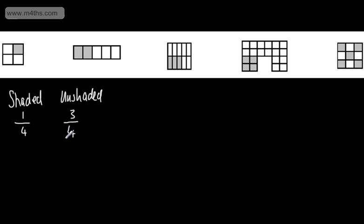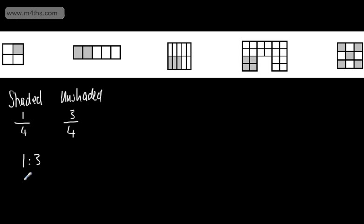When we're talking about ratios, we compare the parts. So for every amount of one thing, how much is there of another thing? So if I wanted to write this as a ratio, I would say the ratio of shaded to unshaded would be one to three. So I have one shaded part for every three unshaded parts. Or we can say it the other way around: for every three unshaded parts, there's one shaded part.